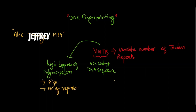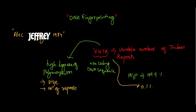Before going into this technique, we should know that according to the Human Genome Project (HGP), 99.9% of DNA is exactly similar in all human beings. Only 0.1% of DNA is different in different individuals, and VNTRs come under this category — meaning every individual has their own unique VNTR sizes or repeats, so it is very unique to an individual.